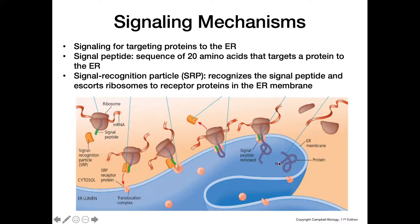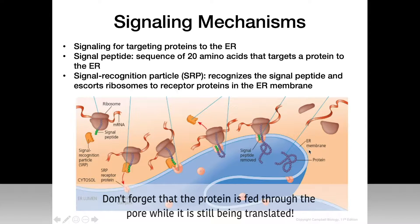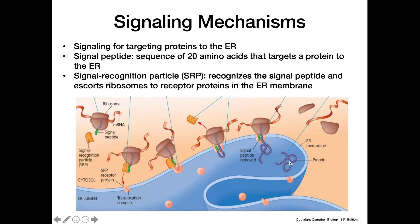As this happens, the signal peptide will be removed. Once the protein is finished being translated into the lumen of the ER, the ribosome and the mRNA will dissociate, and then this protein can be processed further and sent on to the Golgi body and to its final destination within the cell.